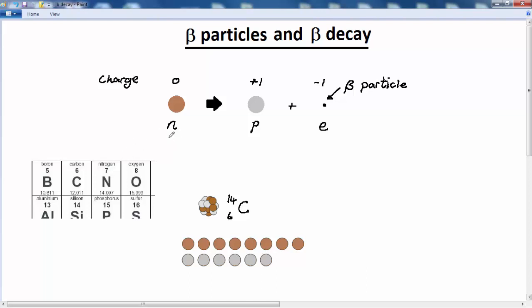We can write the atomic numbers and mass numbers for each of these. The neutron has a mass number of one and an atomic number of zero because it has zero charge. The proton has a mass number of one and an atomic number of one because it has a plus one charge. The electron has a mass number of zero and an atomic number of minus one because it has a negative charge.